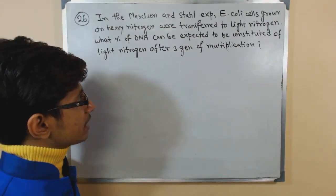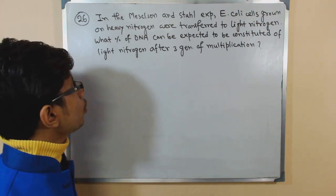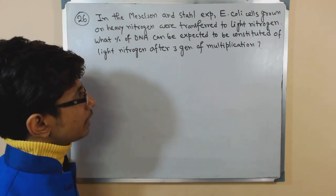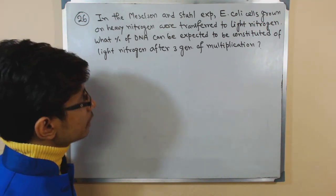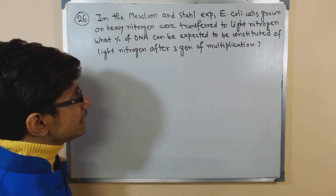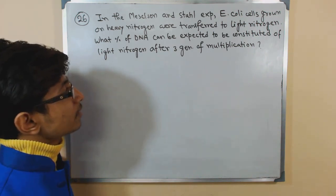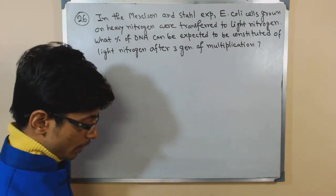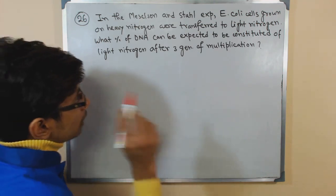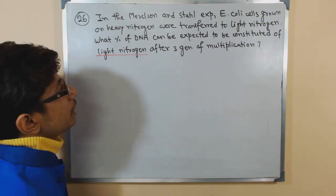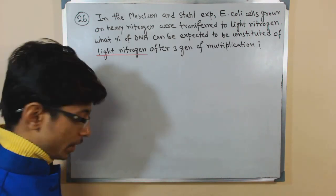In the Meselson and Stahl experiment, E. coli cells grown on heavy nitrogen were transferred into light nitrogen-containing media. What percentage of DNA can be expected to be constituted of light nitrogen after three generations of multiplication? So what they want to know is what percentage of DNA will be completely made up with light nitrogen after three generations of multiplication.